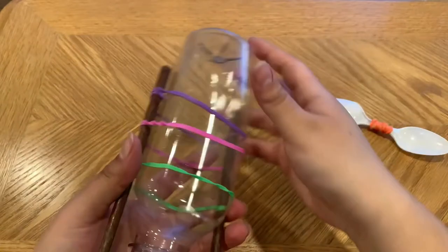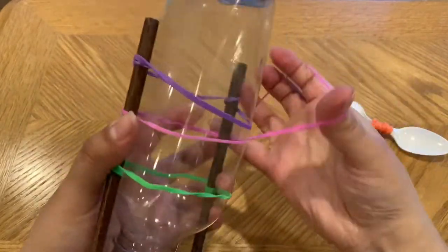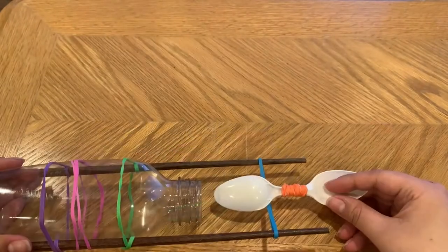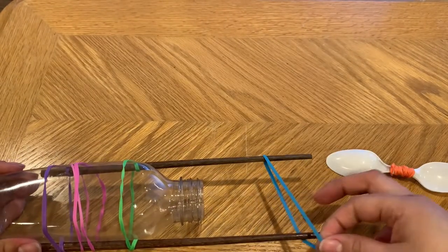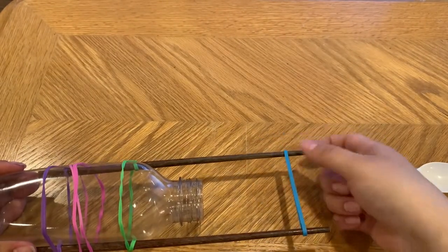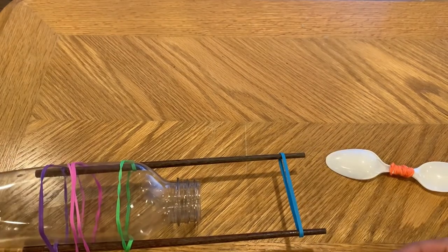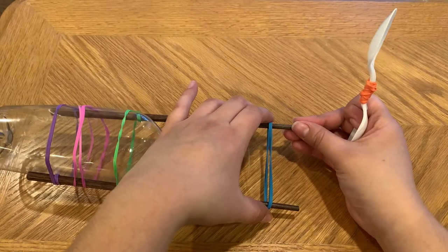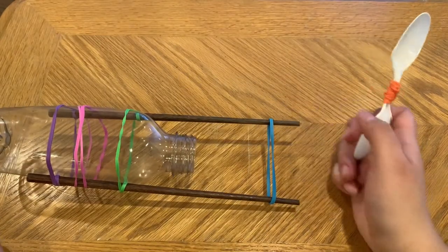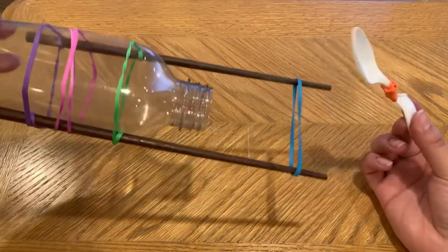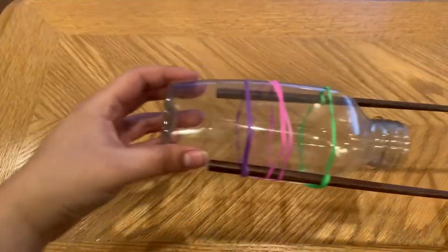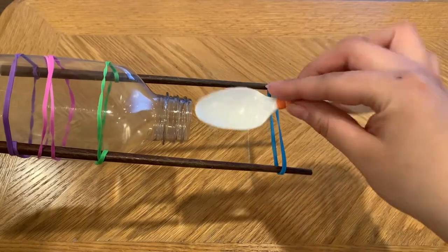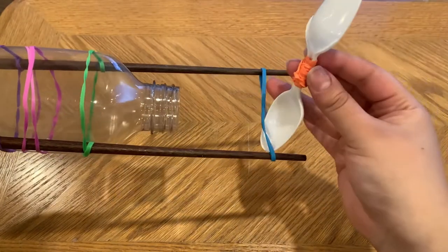Then I'm going to take the first rubber band that we added and wrap it around once more to make it more secure. Next I'm measuring out where the propeller is going to sit. If we want our boat to be pushed forward, then the propeller needs to scoop the water backwards.